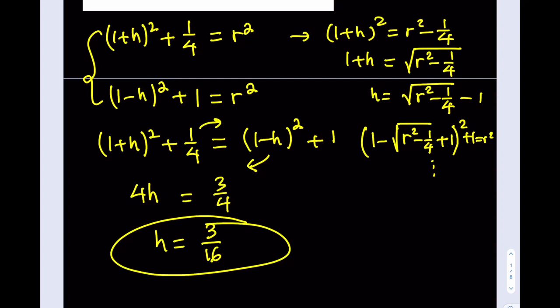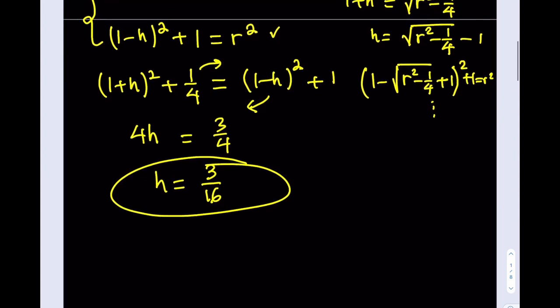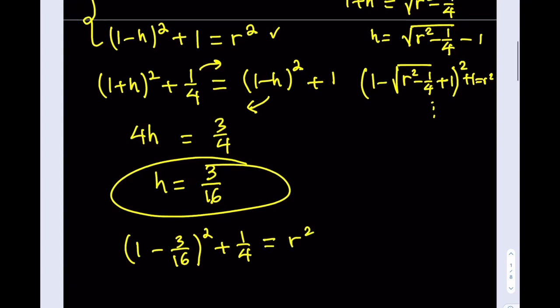So now we know that h is equal to 3 over 16. I can go ahead and plug it into one of these equations. It doesn't matter which one because both of them are going to give you the same answer. So it's a matter of choice. Which one do you want to go by? I'm going to pick the second one. All right. So I'm going to go ahead and plug in, replace h with 3 over 16. Squared plus 1 over 4. And that needs to equal r squared. Oops. That shouldn't be a 1 fourth. That should be 1. All right. So 1 minus h squared plus 1 is equal to r squared.